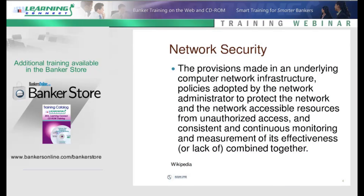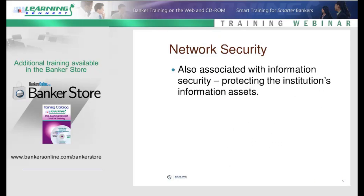To start out with, what do we really mean by network security? What does it all entail? Well, Wikipedia defines it as the provisions made in an underlying computer network infrastructure, policies adopted by the network administrator to protect the network and network accessibility resources from unauthorized access, and consistent continuous monitoring and measurement of its effectiveness, or lack thereof — all combined together.